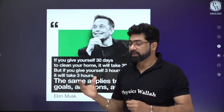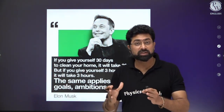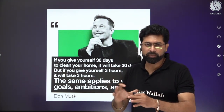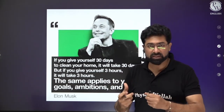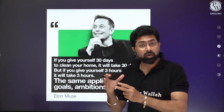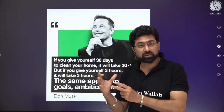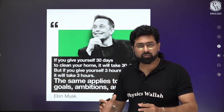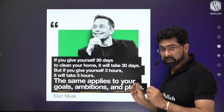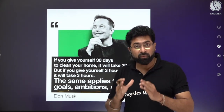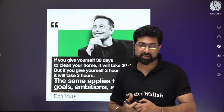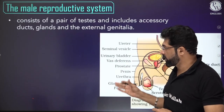Before starting, there's one message I'd like to give you. Elon Musk says that if you have 30 days to do something, you'll work slowly and not be aggressive. But if you know there are only 10 to 20 hours left, you'll work very intensely. That applies to your goals, ambitions, and plans. Elon Musk is very successful, and what he says makes a lot of sense.